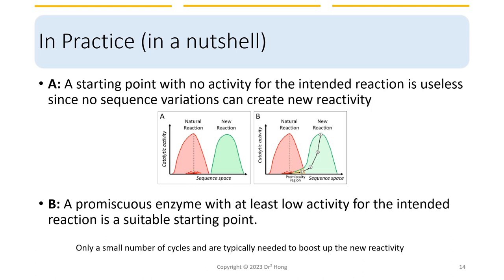Here is a way to look at the outcome of a directed enzyme evolution process. In scenario A, the enzyme has no activity for the intended reaction, and this enzyme would not be ideal for evolution since no sequence variations will create new reactivity. In scenario B, it is a promiscuous enzyme with at least some low activity for the intended reaction, which is a good starting point, and variants of the enzyme can have boosted new reactivity within only a small number of selection cycles.